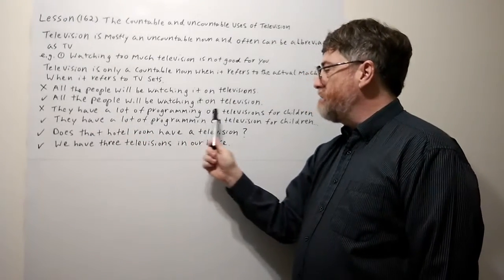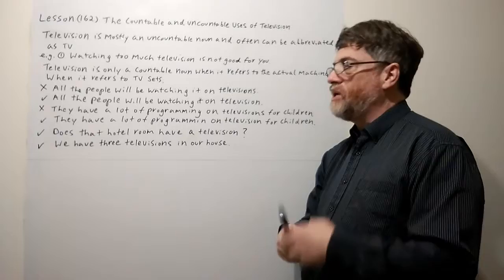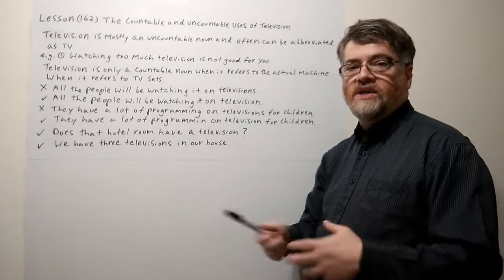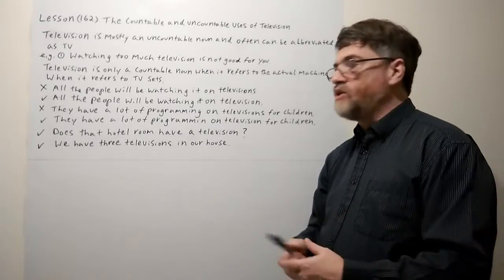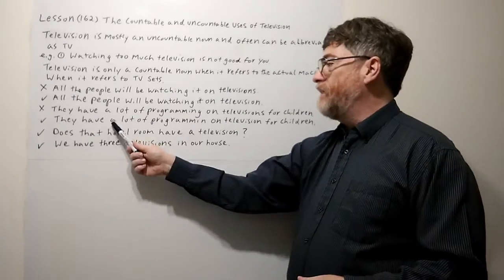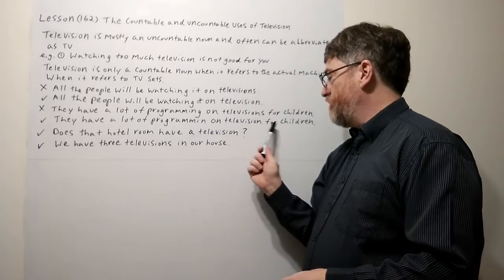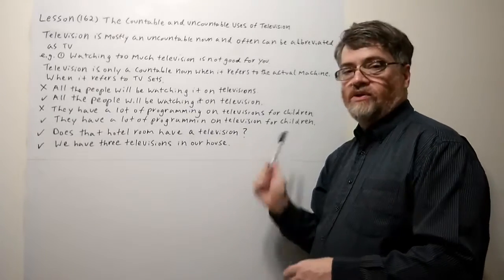Another mistake would be: 'They have a lot of programming on televisions for children.' Again, this is another general sense, so the correct form is: 'They have a lot of programming on television for children.'